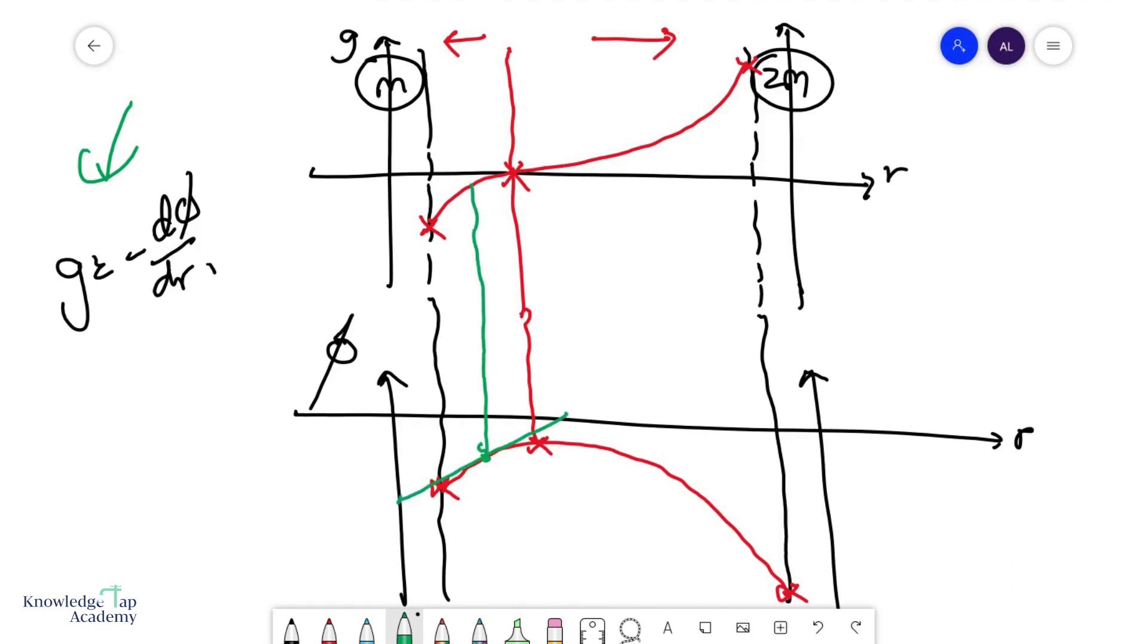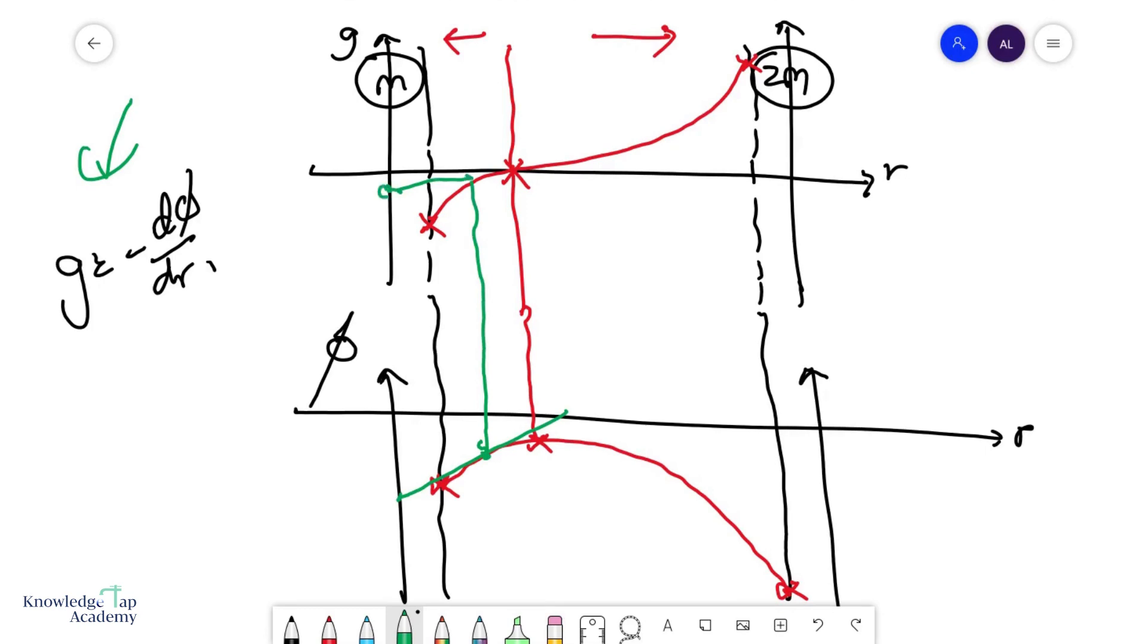And if I bring this up here, the negative gradient of this would be here. And similarly, I can say that delta phi equals to negative integrate g dr. And so the area under the phi r graph, if I bring this here, will give me the change in phi. And that's another one. Thank you.